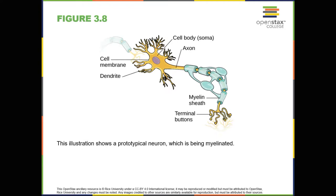Psychologists striving to understand the human mind may study the nervous system. Learning how the cells and organs, like the brain, function helps us to understand the biological basis behind human psychology. The nervous system is composed of two basic cell types: glial cells, also known as glia, and neurons.